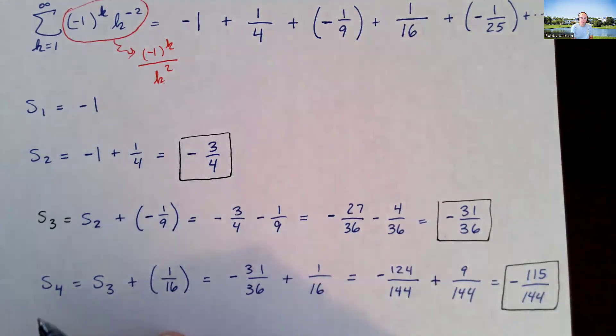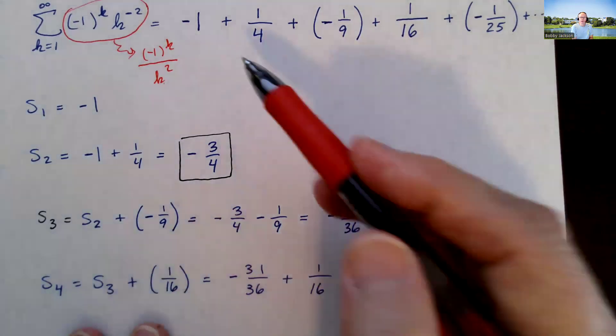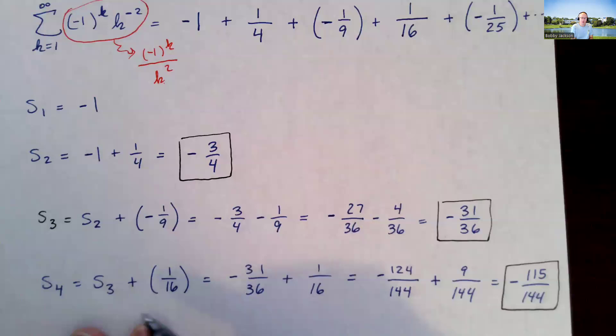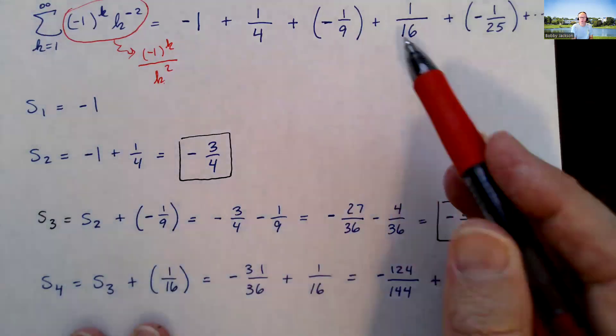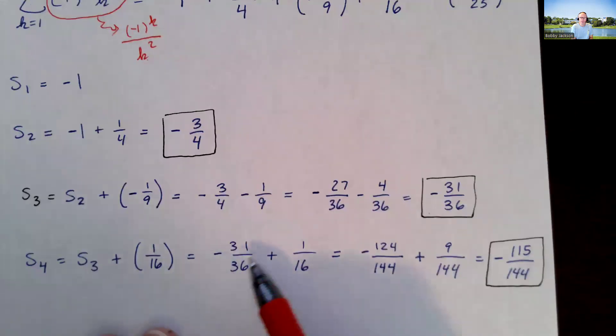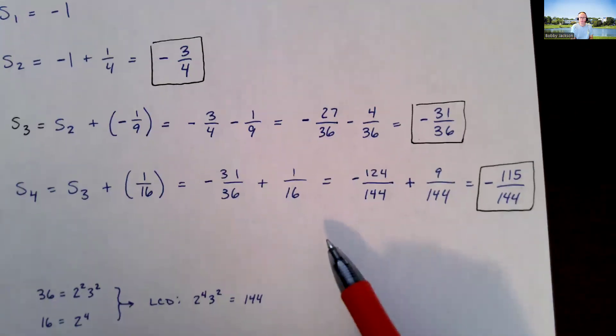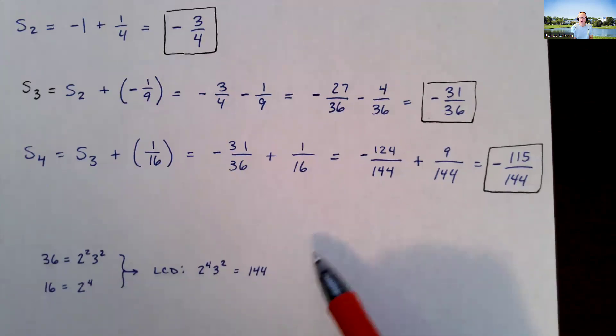And then we can find s sub 4, which would be the sum of the first four. So just add those up. You can also think of it as s sub 3, which is the sum of the first three, plus the fourth one here. And when I do this, we find this as our result.